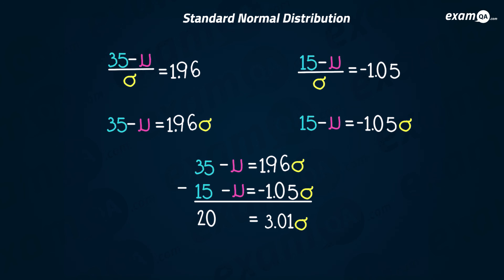We get 20 = 3.01σ, from which we work out σ = 6.645. Substituting back into either equation gives us μ = 22 to the nearest whole number. And there we have it.